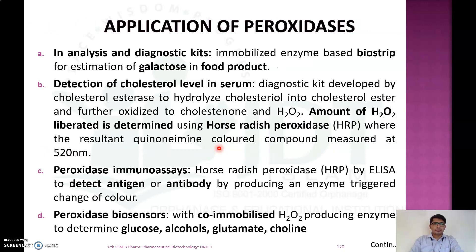Peroxidase is mainly used in analysis and diagnostic kits. For example, immobilized peroxidase enzyme-based biostrips are used for estimation of galactose in food products. It is also used for detection of cholesterol levels in serum using a diagnostic kit: cholesterol esterase hydrolyzes cholesterol into cholesterol esters, which are further oxidized to cholestenone and hydrogen peroxide; the released hydrogen peroxide is determined using horseradish peroxidase enzyme, producing a colored compound measured at 520 nm.